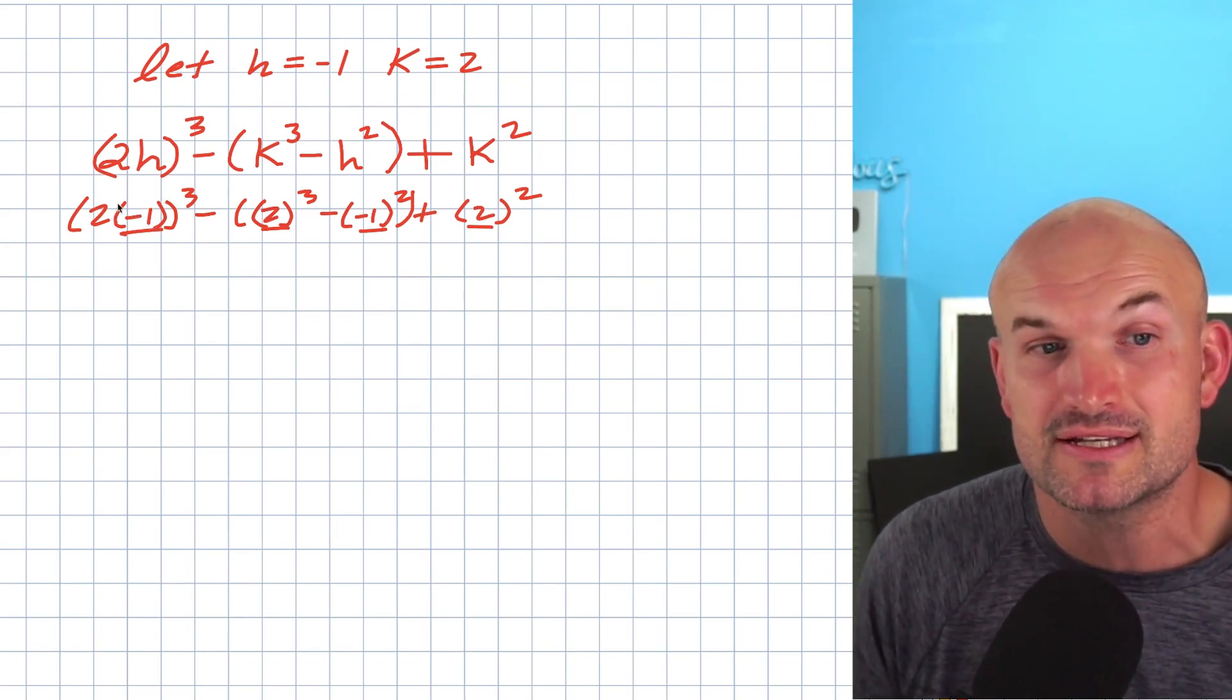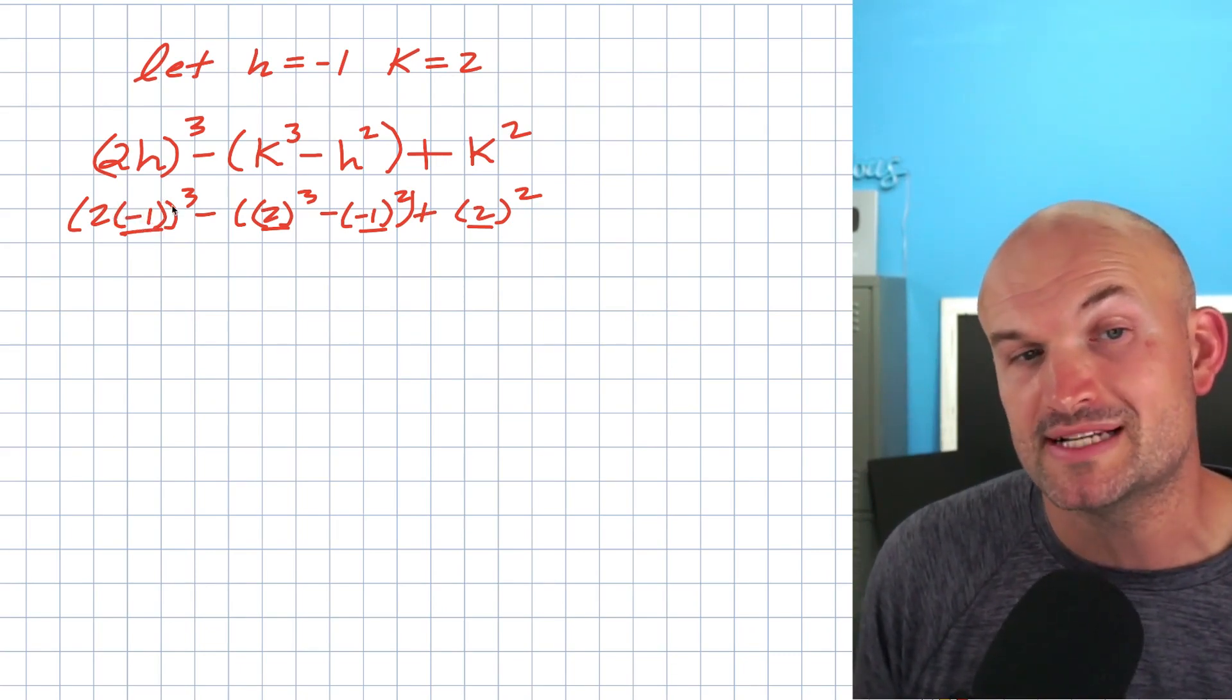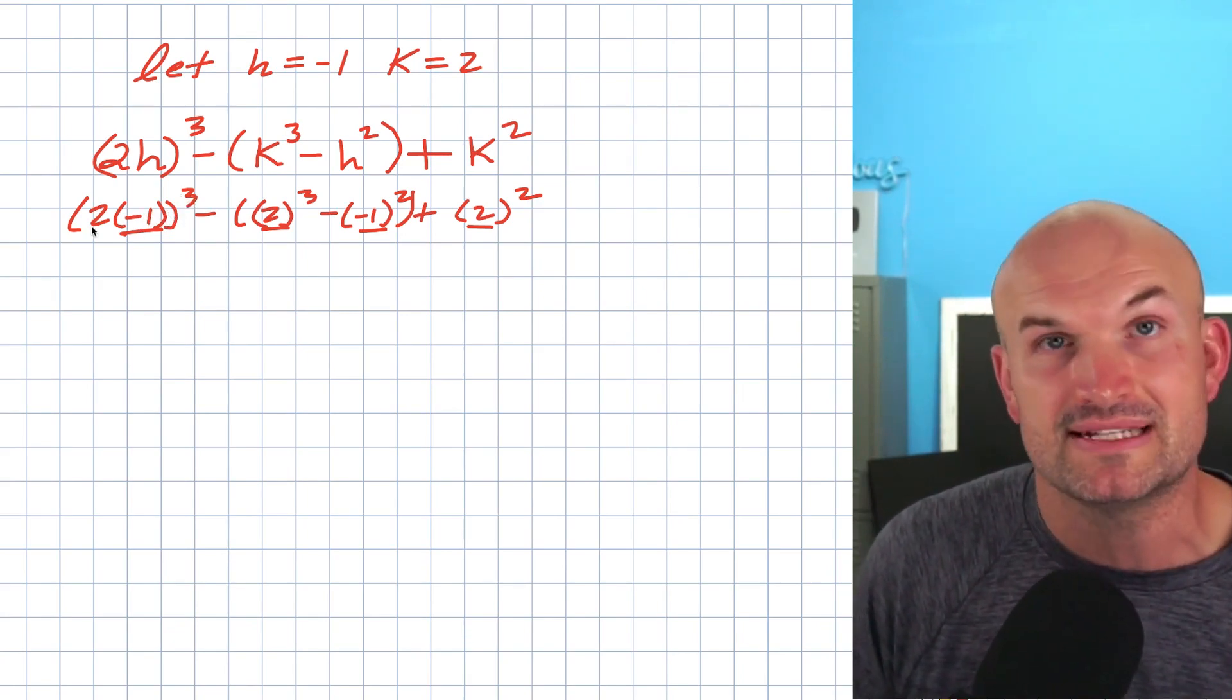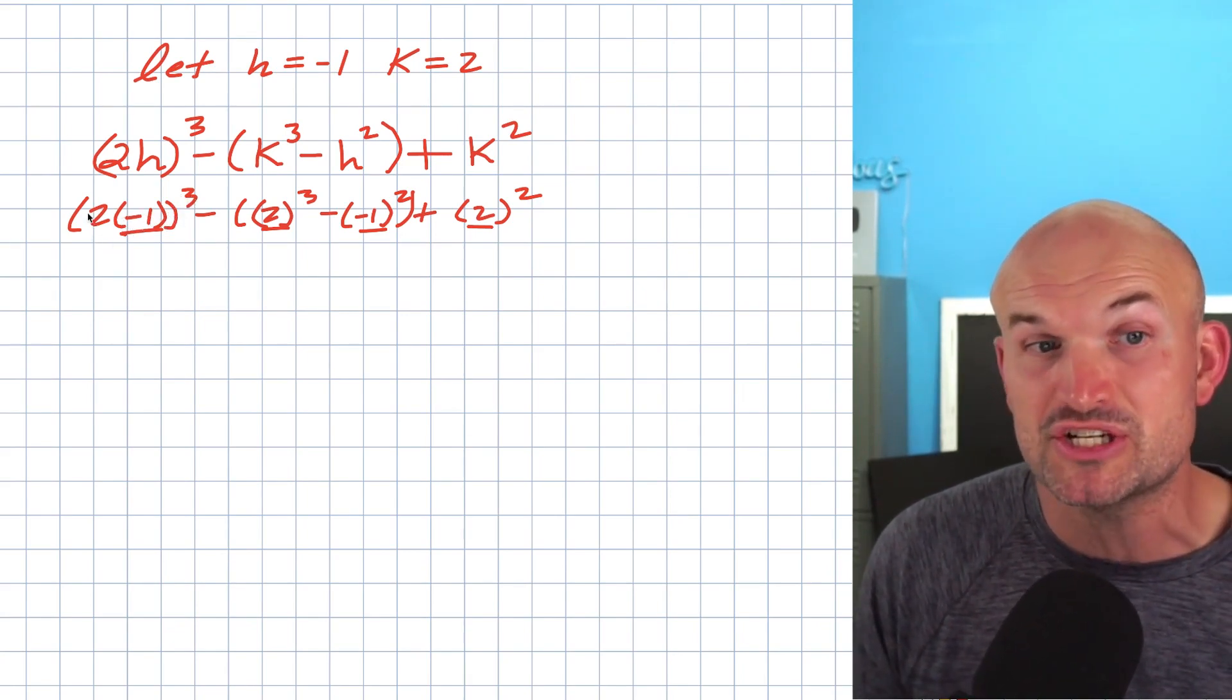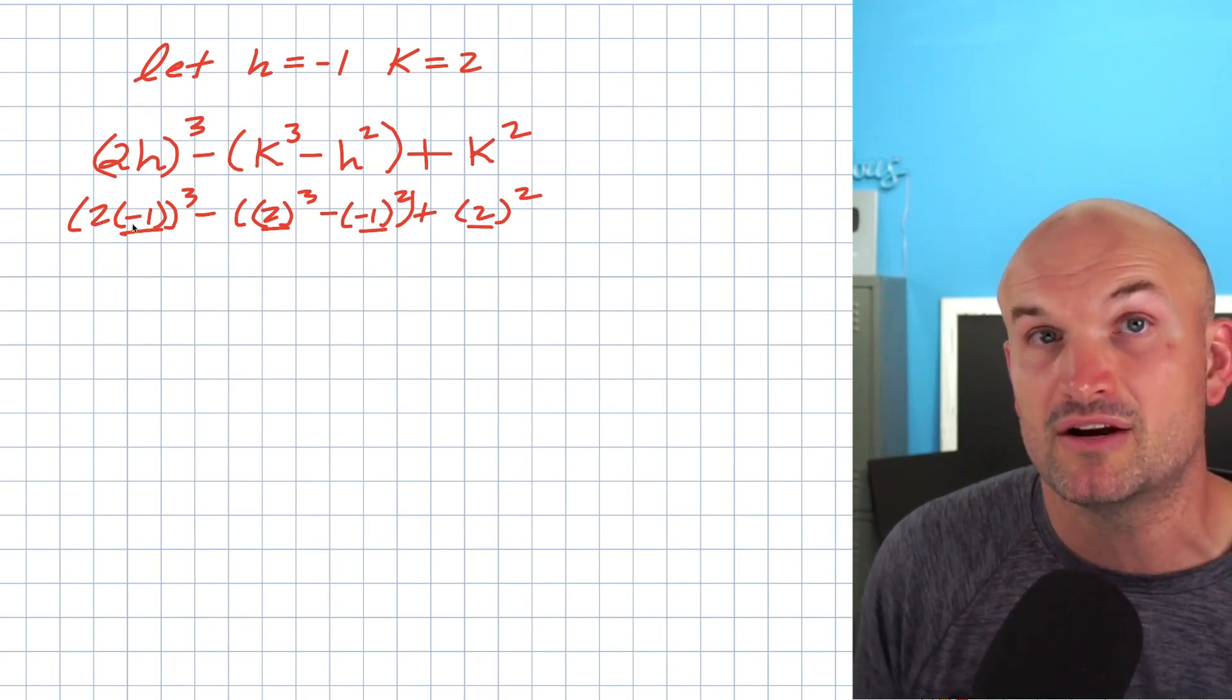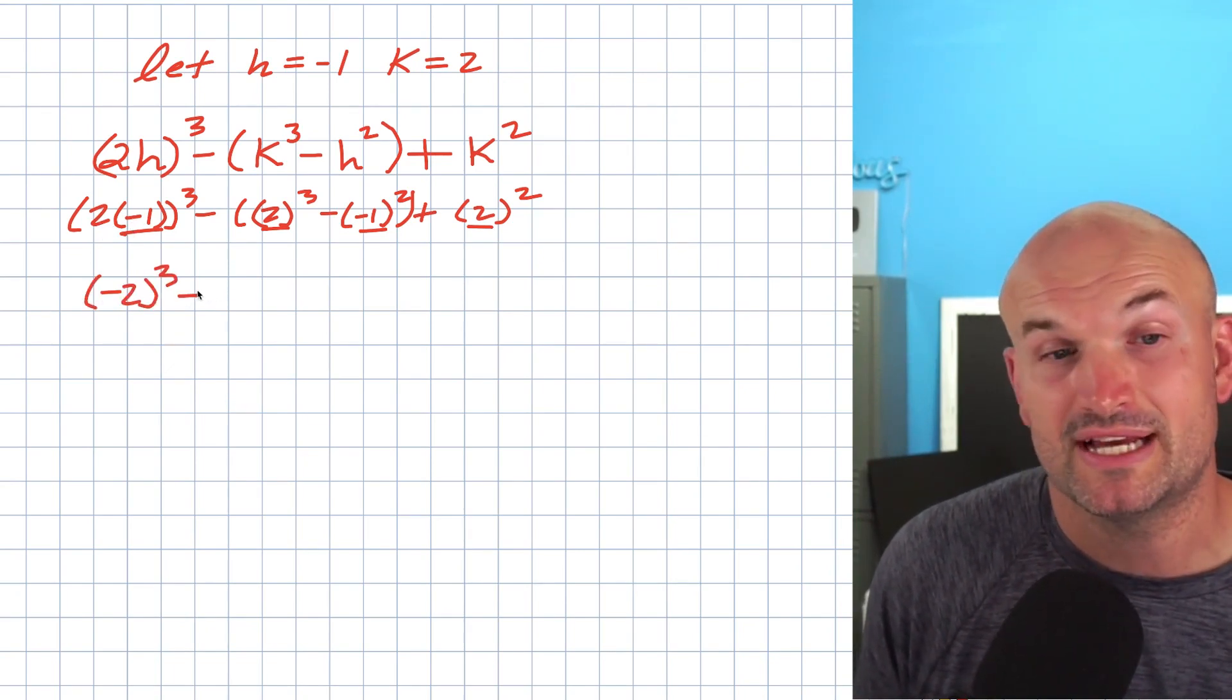For example, in here I actually need to simplify this. I have two times negative one being raised to the third power. It's not negative one raised to the third power and then times two. We got to make sure this expression is simplified first. So two times negative one is going to be negative two, and then now I can just rewrite everything else.